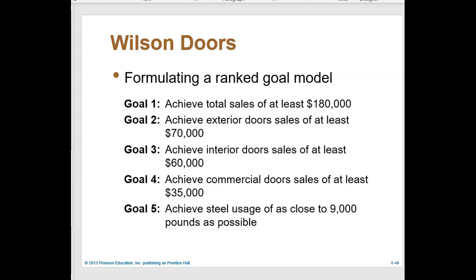In order to deal with these two drawbacks of the weighted approach, we're going to introduce a new approach: solving a goal programming model using a ranked method. In the ranked goals approach we assign ranks or priorities rather than weights to goals. Goals are ranked based on their importance to management — lower ranked goals are considered only after higher ranked goals are met. It is also possible to assign the same rank to two or more goals.